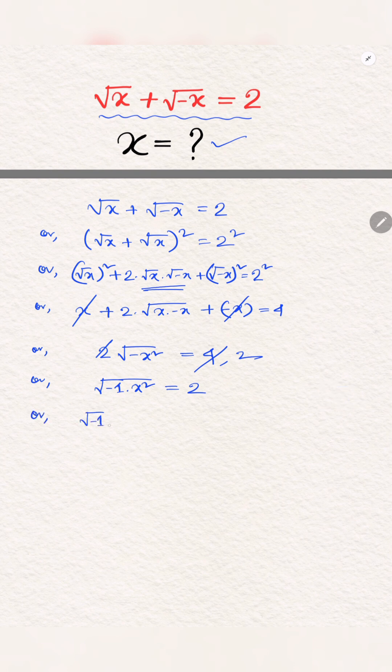And here also, root over ab equals root a times root b. So root over -1 equals √x² equals 2.